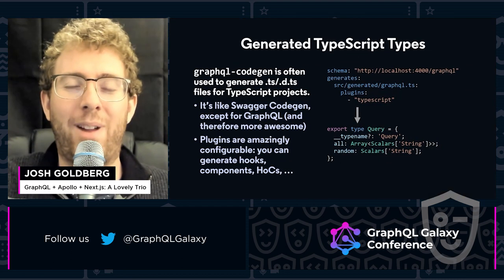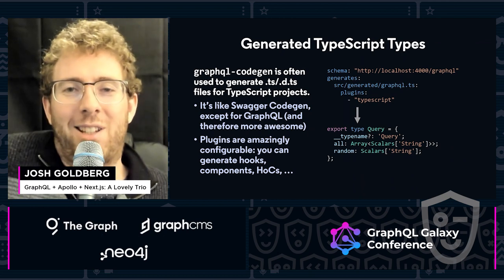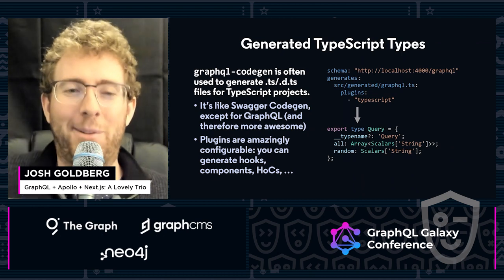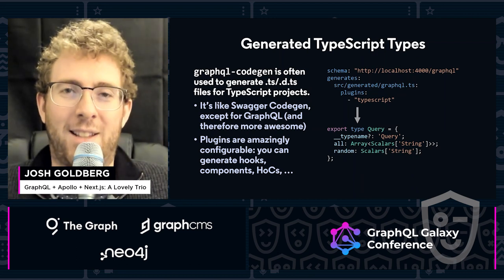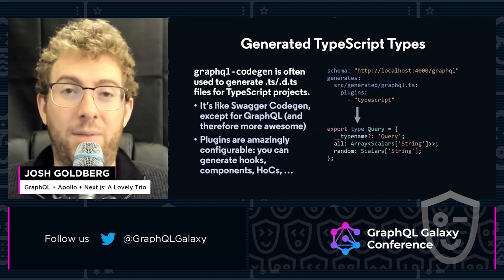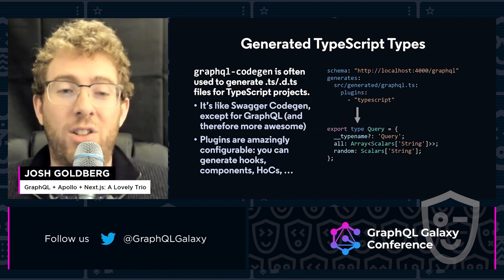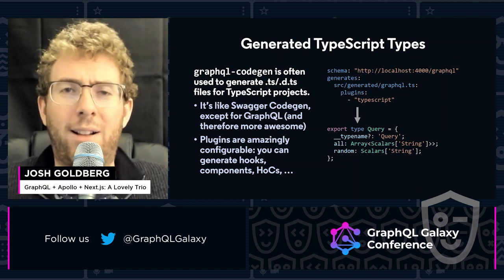We can generate full TypeScript types for our GraphQL schemas just with a single command, yarn gql. And that's just one of the plugins that's available to us — the TypeScript one. These plugins are incredibly configurable, and I have links to docs for these in the end of these slides. You can generate hooks, components, higher-order components — all sorts of wild and wacky stuff for your code.